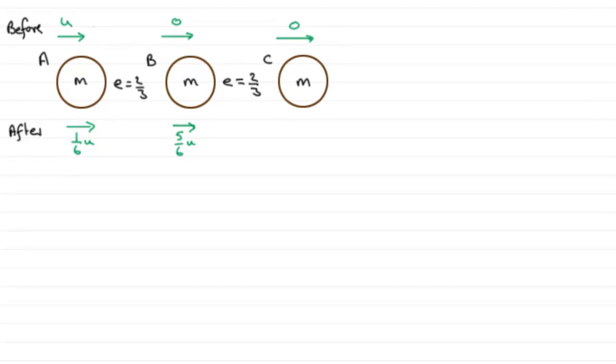Now for this next part, what we've got to do is show that the kinetic energy lost in the collision is 5/36 mu squared. And you'll notice that I've updated the diagram with the velocities that we found in the previous part: 1/6 U for A and 5/6 U for B.